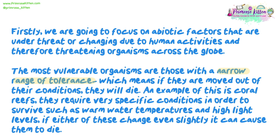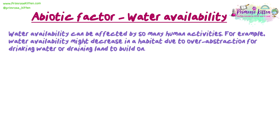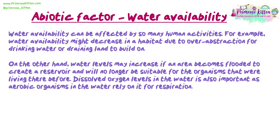The most vulnerable organisms are those with a narrow range of tolerance, meaning if they are moved out of their optimal conditions they will die. An example is coral reefs, which require very specific conditions to survive, such as warm water temperatures and high light levels — if either changes even slightly, they can die. Water availability can be affected by many human activities: for example, it might decrease due to over-abstraction for drinking water or draining land to build on, or increase if an area becomes flooded to create a reservoir.